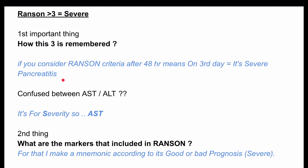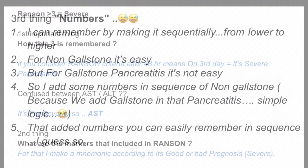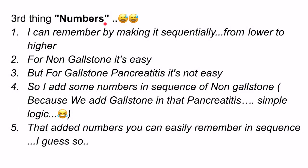The second thing is the confusion between AST or ALT — which enzyme is included in Ranson's criteria. It's for severity, so it's AST. For the markers included in Ranson's criteria, I make a mnemonic according to whether it is good or bad.